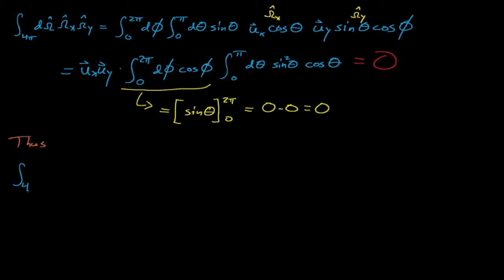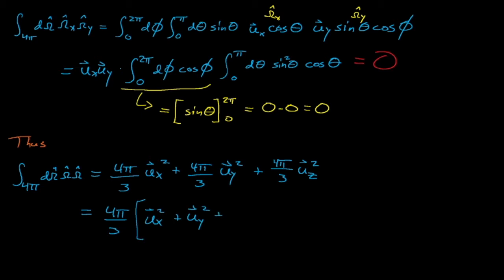Thus, this integral gives us 4 pi divided by 3 times the ux unit vector squared plus the uy unit vector squared plus the uz unit vector squared, which is really just the magnitude of a unit vector, which equals 1. So when all the dust settles, we find that the second moment of some constant with respect to omega just equals that constant times 4 pi divided by 3.